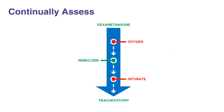PALS management of respiratory distress or failure is adjusted based on the severity of the current condition. For example, mild asthma is treated with bronchodilator inhalers, but severe asthma or status asthmaticus may require ET intubation. As a provider, you must continually assess the individual's current needs and adjust care accordingly.